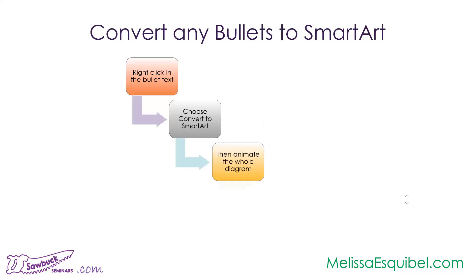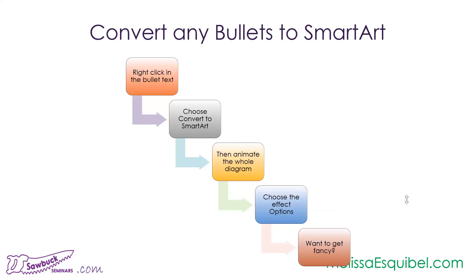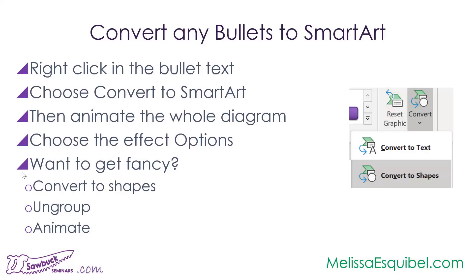When I ran the slide, it was bringing in the arrow before the shape — not what I wanted. So in the animation pane I moved each arrow down after its corresponding shape. Then the presentation flows: talk about one step, the arrow appears as a segue, then the next step comes in. Remember: you can only do this tight per-piece animation after you convert the smart art to shapes, then ungroup it.